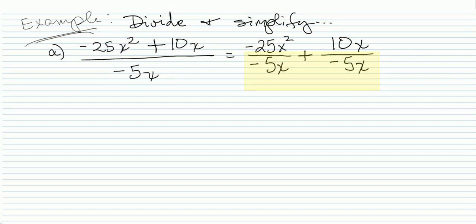That's it. We take each term in the numerator, put it over the denominator, and then we reduce. All you're gonna do is leave each fraction in simplest terms.